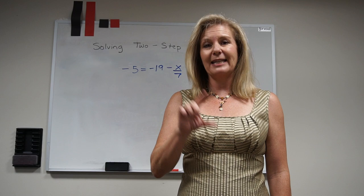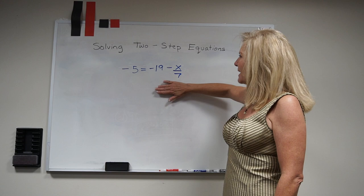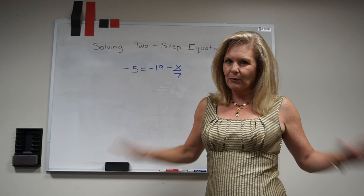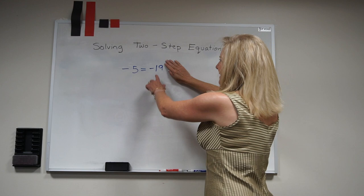We always start on the side that has the variable. When I take a look at this variable, I see this negative 19 is attached to it and I need to get rid of that negative 19. So if I cover up that second part of that equation, I think to myself, well how do I get rid of negative 19?